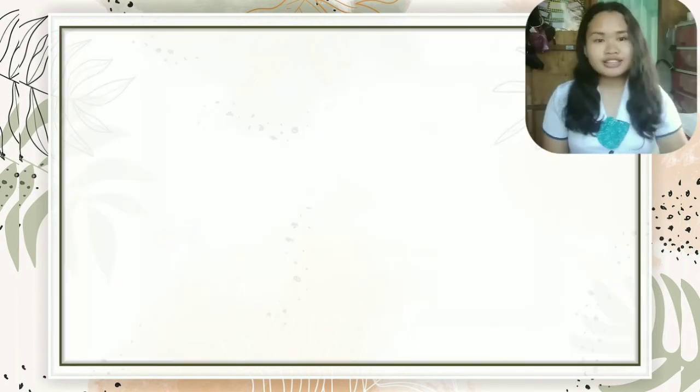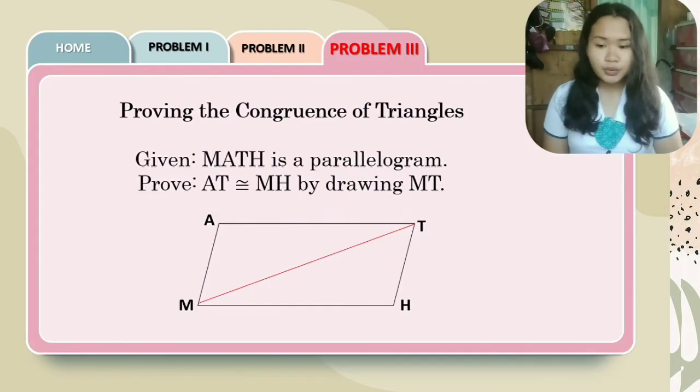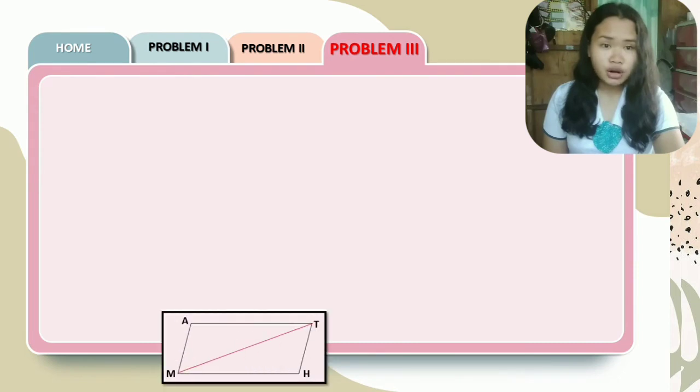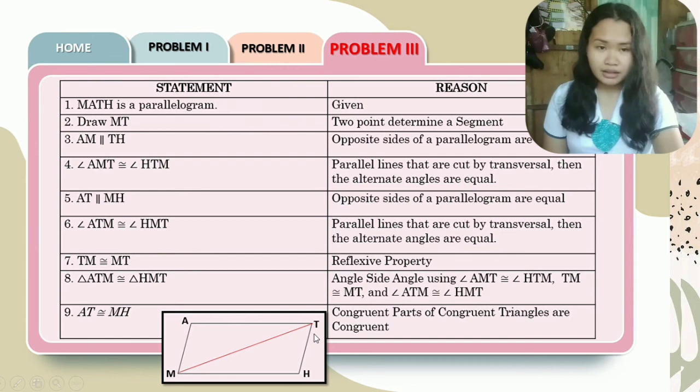For today's discussion, we need to talk about proving the congruence of triangles. We have here given that MATH is a parallelogram. Prove AT is congruent to MH by drawing MT. By proving, we need to use the two-column table. AT is congruent to MH by drawing MT or the diagonal of the parallelogram. Your statement: MATH is a parallelogram. Reason: it is given.